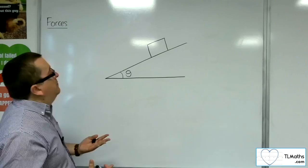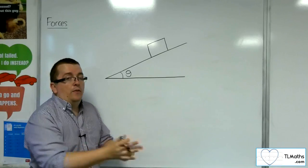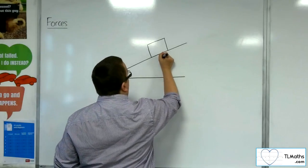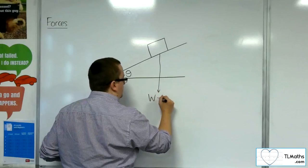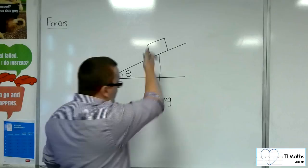So what we've got is a situation where we've got this block on this inclined plane and the weight of that particle will be working vertically downwards. So my weight, mass times gravity, is working straight down.